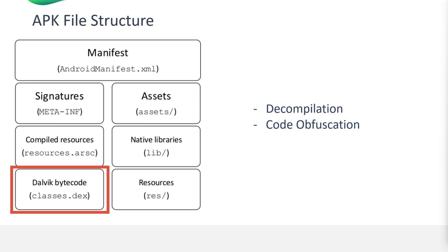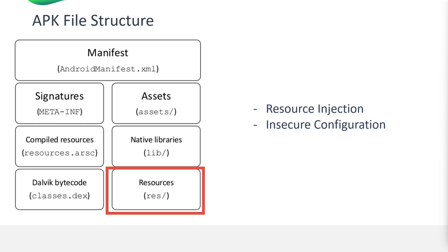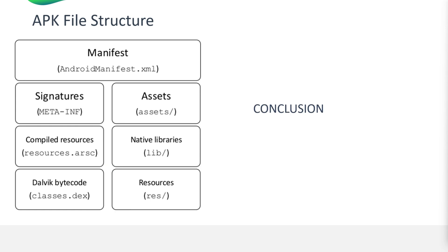Finally, the res directory contains resources such as layouts, images, and XML files that the application uses — properly handling and securing these resources is essential. Look for vulnerabilities in resource files that could lead to injection attacks, and review XML configurations for security misconfigurations that could expose the application to attacks. By understanding the components of an APK file from a penetration testing perspective, you can better identify and mitigate potential security vulnerabilities. Regularly reviewing and securing these components helps in maintaining robust application security.